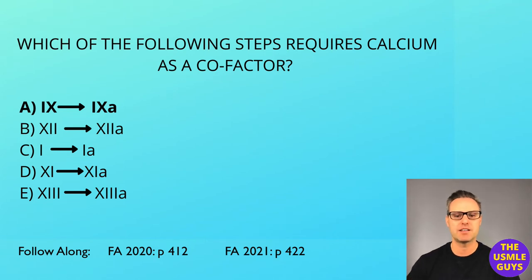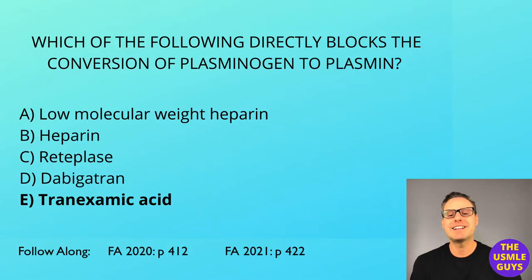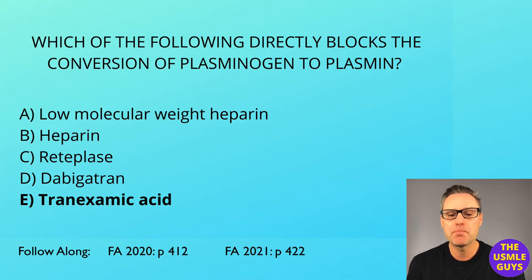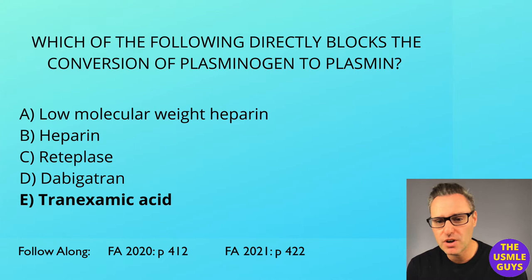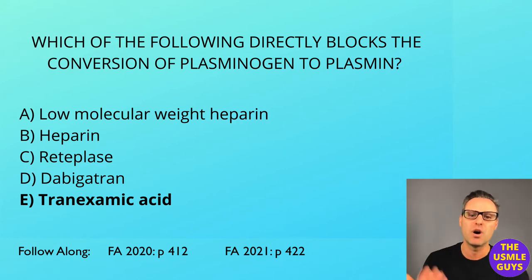On to the next question. The correct answer here is E. This really just requires that you know which drugs work where in the coagulation cascade. If you zoned out, please go back, slow down the video, and add notes to the pathway I provided so that you know where everything works.